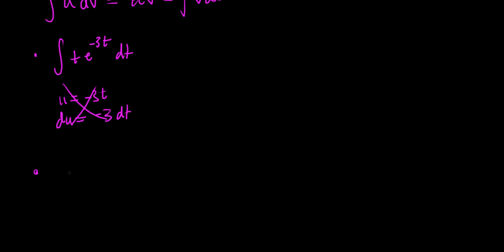We have to select a proper u and dv to help us solve this integral. Let's try u equals e to the negative 3t. If we differentiate that, du equals negative 3 e to the negative 3t dt. That looks more complicated, not less — we're not getting anywhere by doing this. So I don't want to do that.